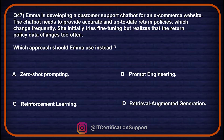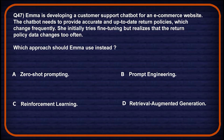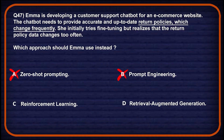Let's look into question number 47: Emma is developing a customer service chatbot for an e-commerce website. The chatbot needs to provide accurate and up-to-date return policies, which change frequently. She initially tries fine-tuning but realizes the return policy data changes too often. Option A: zero-shot prompting — uses general reasoning without examples but doesn't access updated data, so wrong. Option B: prompt engineering — improves clarity but can't fetch changing context, so wrong. Option C: reinforcement learning — optimizes behavior through feedback, not suitable for dynamic knowledge updates, so wrong. Option D: retrieval-augmented generation — enables real-time access to external sources for up-to-date responses, so option D will be the correct choice.